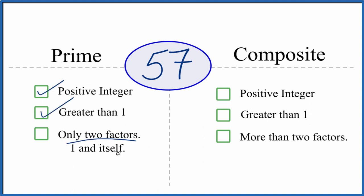And are there only two factors that divide into 57? 1 and 57. So we know that 1 times 57 equals 57. So there's 1, 2 factors. But are there any more?